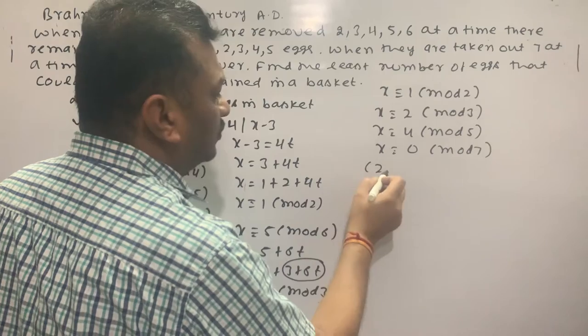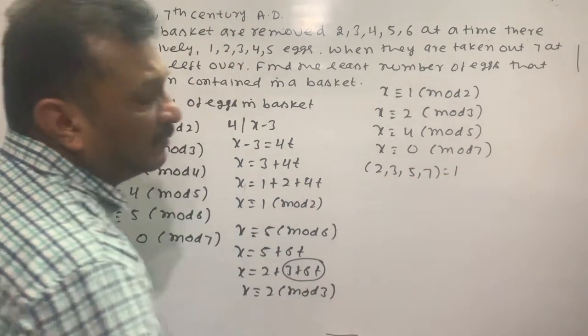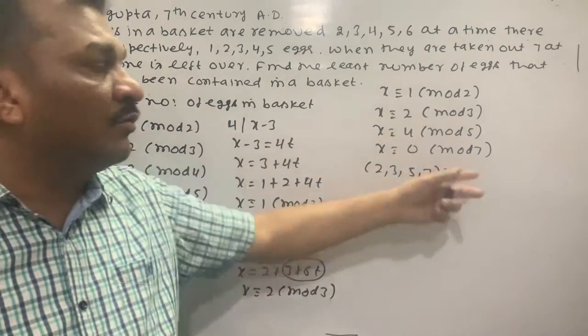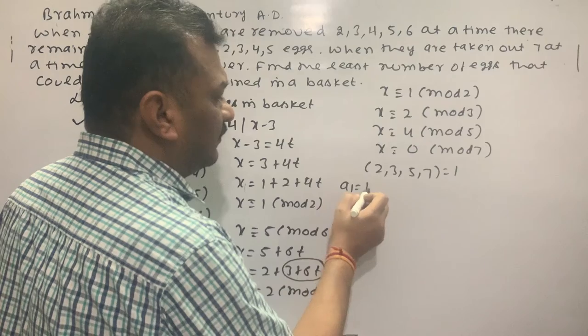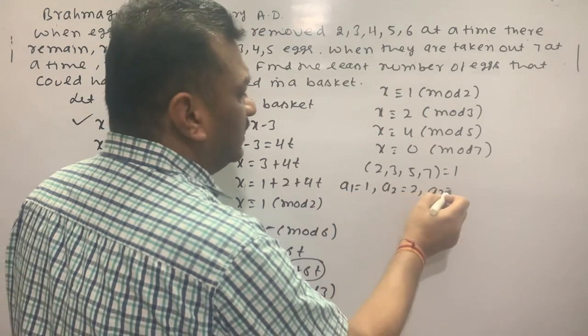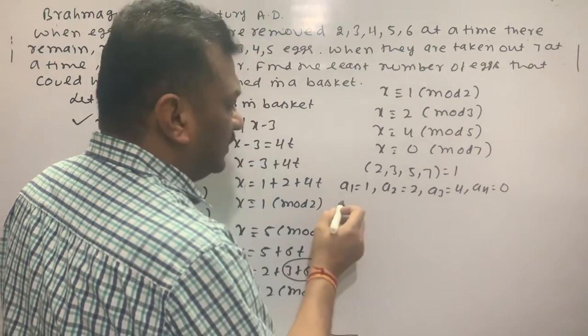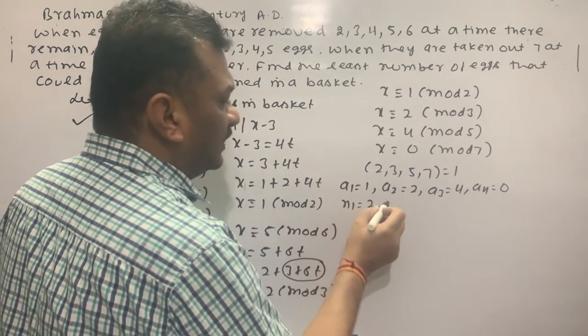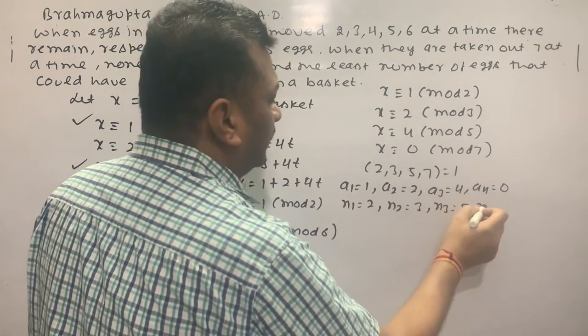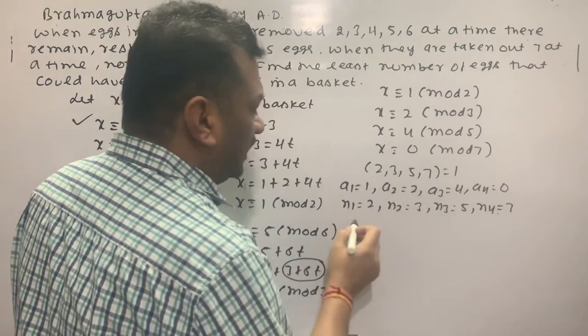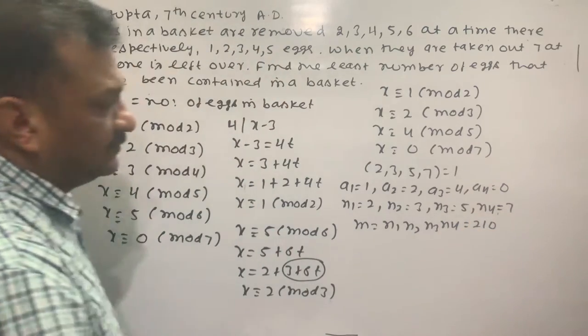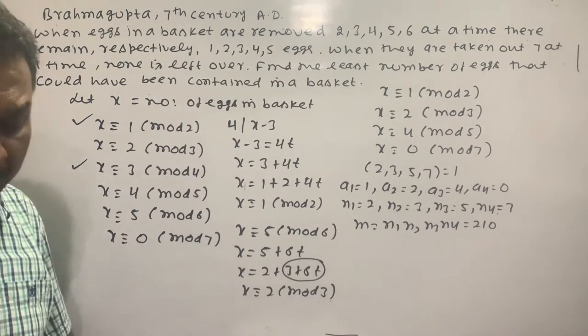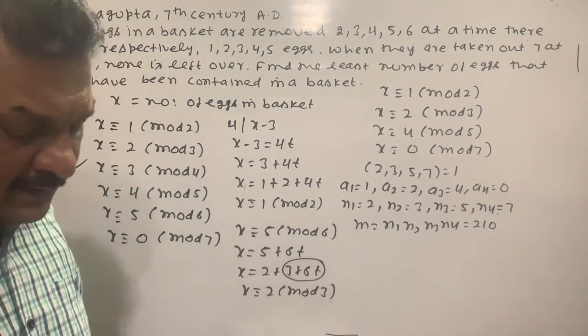So A1 value is 1, A2 value is 2, A3 value is 4, A4 value is 0. N1 value is 2, N2 value is 3, N3 value is 5, N4 value is 7. So M is N1 times N2 times N3 times N4, which is 210.